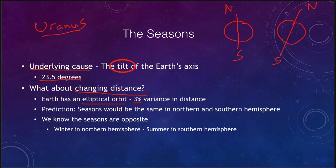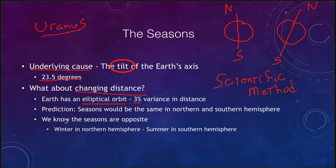If we think about this using the scientific method, the theory that seasons are caused by the earth being closer or further from the sun does make a prediction. The prediction is that when we're closer to the sun we would have summer, and further away we would have winter. It wouldn't matter where you are on the earth, so the seasons would be the same in the northern and southern hemisphere — when it is summer in the northern hemisphere, it would also be summer in the southern hemisphere.